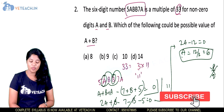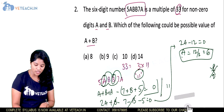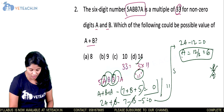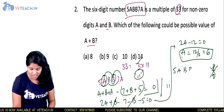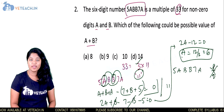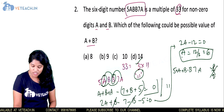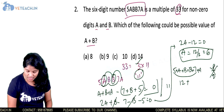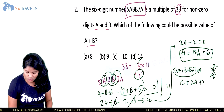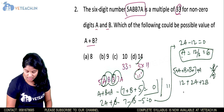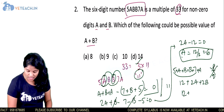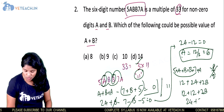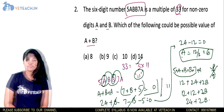Now let us find the value of b using divisibility by 3. For 5abb7a to be divisible by 3, the sum of all digits must be divisible by 3. We get 5 plus 7 equals 12, plus 2a plus 2b. Substituting a equals 6: 12 plus 12 plus 2b, that is 24 plus 2b, must be divisible by 3.